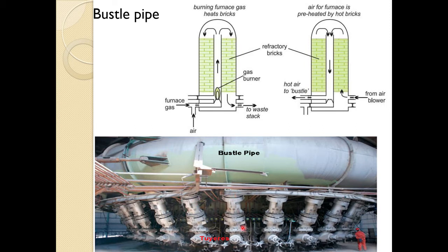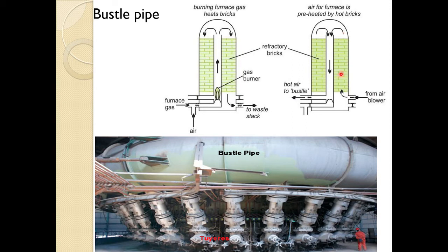Gases go through the tuyeres, and fuel can be injected from the side, carrying the hot blast air coming from the stoves. In the stoves, furnace gas from the top is burned through checker bricks which get heated up; the exhaust goes to the chimney. When hot air is needed, the cycle is reversed — cold air is blown through the heated checker bricks and you get hot air, which goes to the bustle pipe and then to the tuyeres.